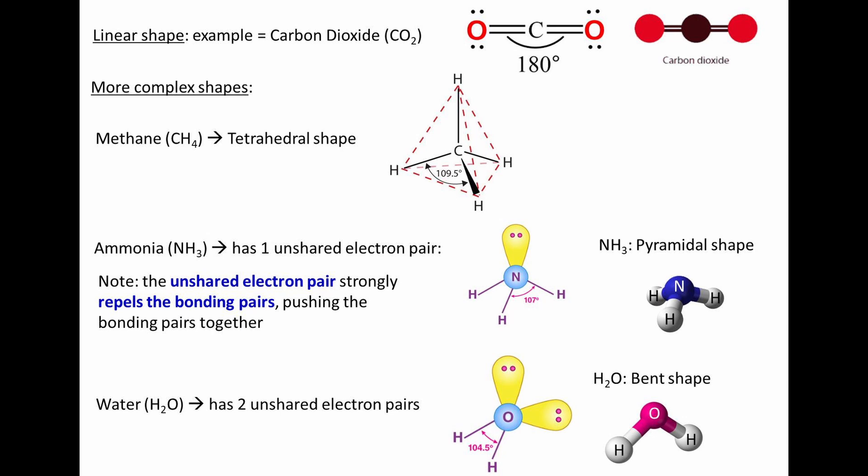Ammonia has a pyramidal shape. The angle between the covalent bonds is reduced to 107 degrees, because the unshared electron pair of the nitrogen atom strongly repels the bonding pairs, pushing the bonding pairs together. A water molecule has a bent shape. The oxygen atom in water has two unshared electron pairs, and as a result the angle between the covalent bonds is reduced to 104.5 degrees.